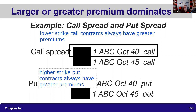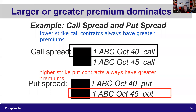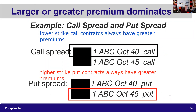The dominant leg is going to be the 45 put. That's important because we need to determine whether it's debit or credit, and bullish or bearish. So to summarize: lower strike call contracts always have greater premiums, making the lower strike the dominant leg in a call spread. For puts, higher strike put contracts always have the greater premiums, making the higher strike the dominant leg.